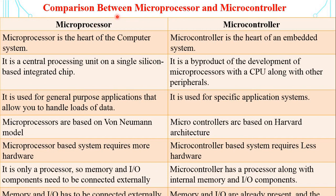The next topic is a comparison between microprocessor and microcontroller. First: a microprocessor is the heart of a computer system, whereas a microcontroller is the heart of an embedded system. Second: a microprocessor is a CPU on a single silicon chip, whereas a microcontroller is a by-product of microprocessor development with a CPU along with other peripherals. Third: a microprocessor is used for general-purpose applications handling large loads of data, whereas a microcontroller is used for specific application systems. Microprocessors are based on Von Neumann architecture, whereas microcontrollers are based on Harvard architecture.